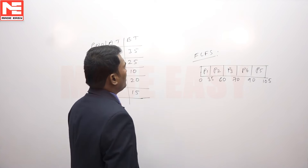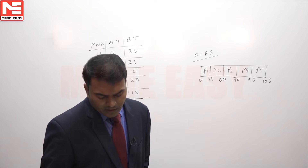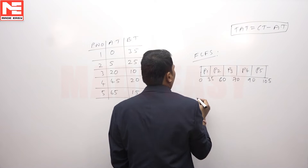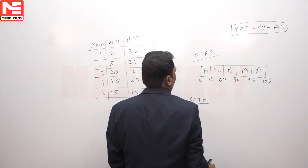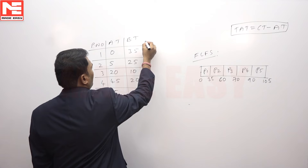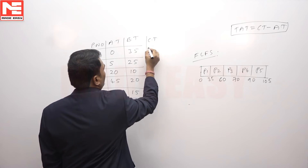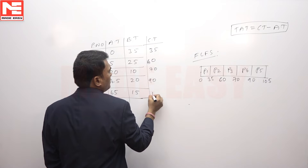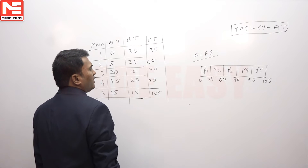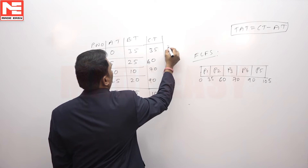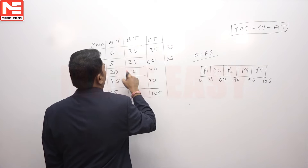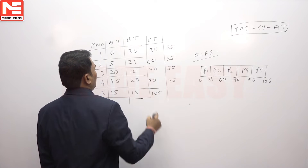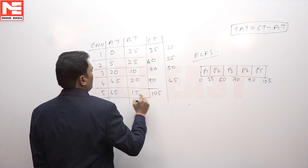Now find the turnaround time. The turnaround time formula is: completion time minus arrival time. The completion times are: P1 = 35, P2 = 60, P3 = 70, P4 = 90, P5 = 105. The turnaround times are: 35 minus 0 = 35, 60 minus 5 = 55, 70 minus 20 = 50, 90 minus 45 = 45, and 105 minus 65 = 40.